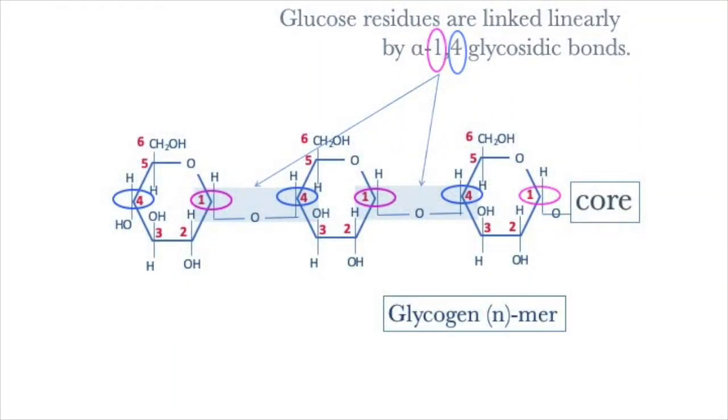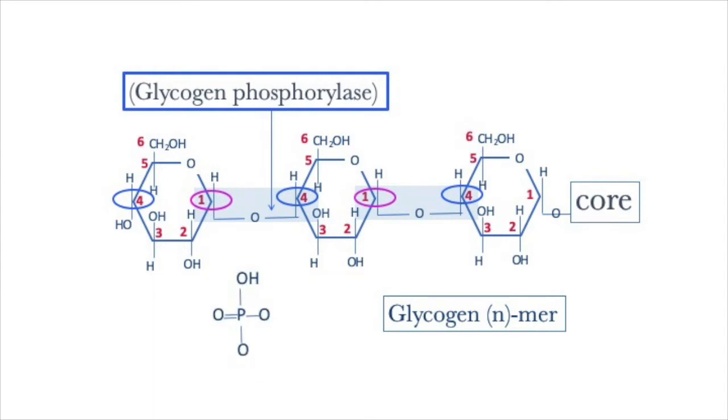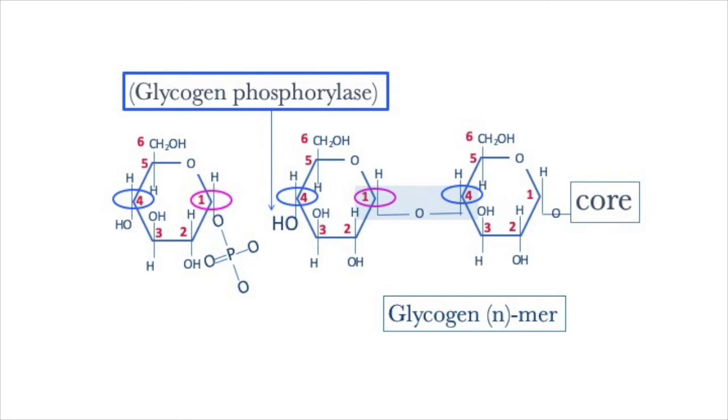Glycogen phosphorylase uses inorganic HPO4⁻ to split glucose from the polysaccharide chains of glycogen.